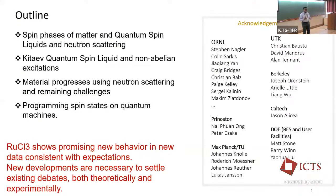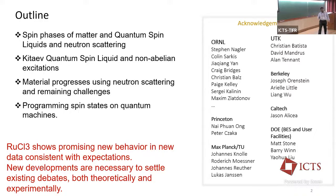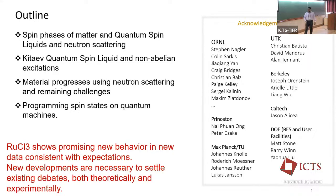The talk I will be presenting has this outline: I'll be talking about spin phases of matter, quantum spin liquids, and neutron scattering — Bella Lake had already given a lot of introduction to that. I'll also touch on Kitaev spin liquids, the expectations, material progress, and some of the data we are getting. And if I have time, I'll talk about how we are thinking of programming the spin states of matter on quantum machines.